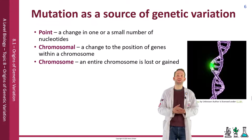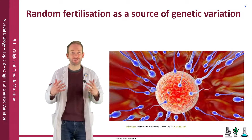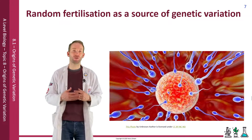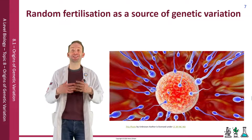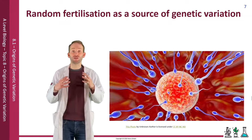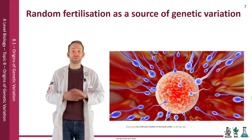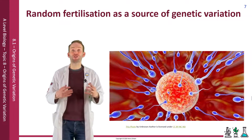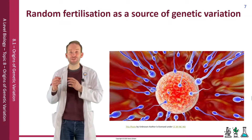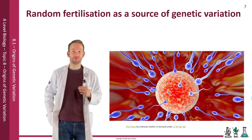Lastly, random fertilization. The male and female gametes from two unrelated individuals fuse to form a new genetic individual. Which gametes fuse in fertilization is random, and it brings with it huge variation due to the huge numbers of possible gametes in the first place. For example, in humans, the male can ejaculate up to 150 million genetically individual sperm, each of which could fertilize the ovum.